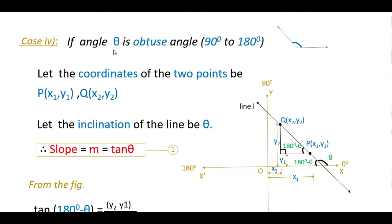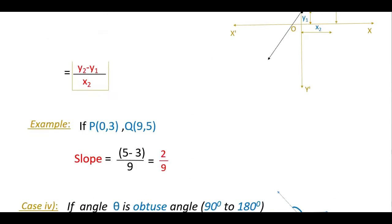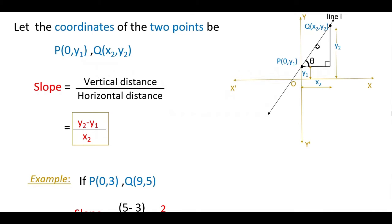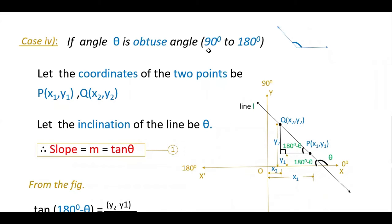This is another case where the angle theta is an obtuse angle. Obtuse angles are from 90 degrees to 180 degrees. In the previous case the angles were acute angles, meaning 0 to 90 degrees. But if theta is an obtuse angle, that is 90 to 180 degrees, then the line will be like this. The inclination of this line is such that theta is from 90 to 180 degrees. Let the coordinates be P(x1, y1) and Q(x2, y2). So here theta is the inclination and since this is a linear pair, total is 180 degrees. So if this is theta, then this angle is 180 minus theta.